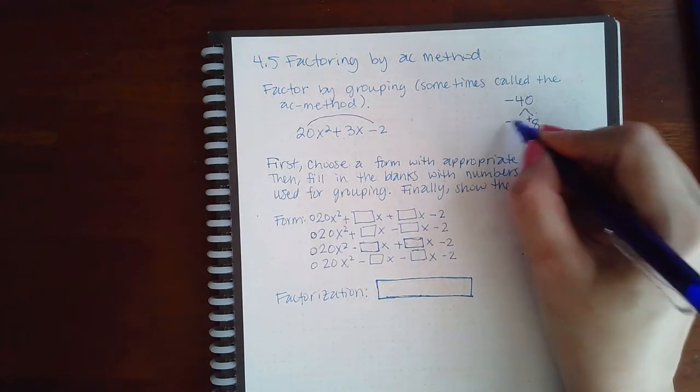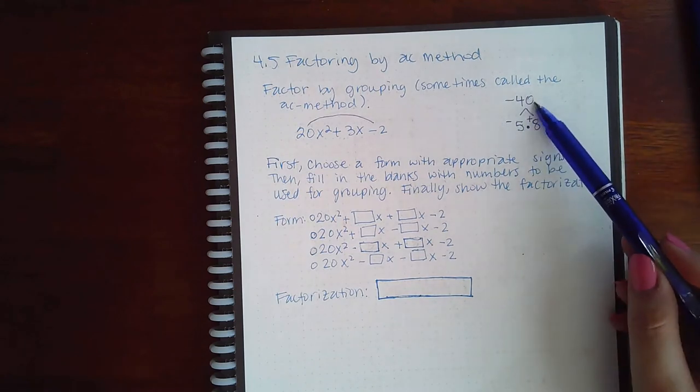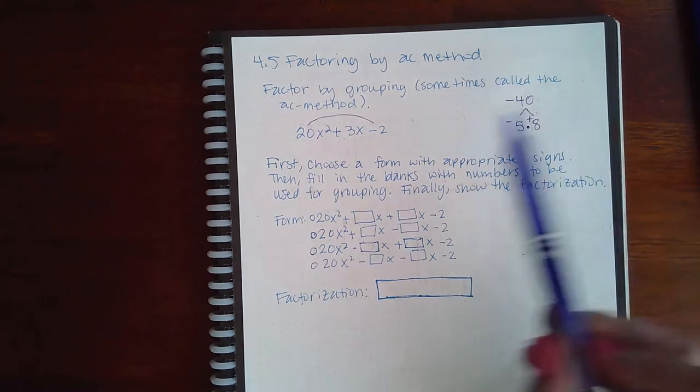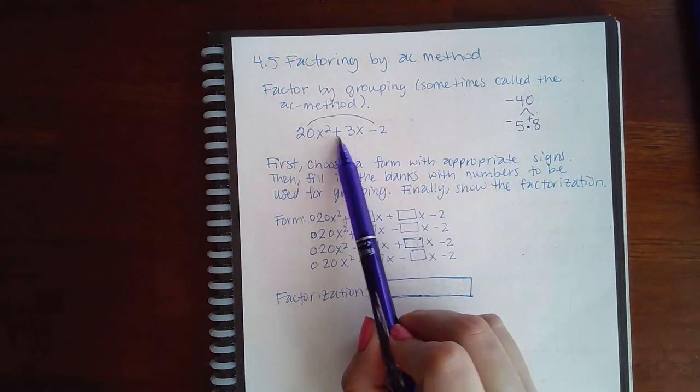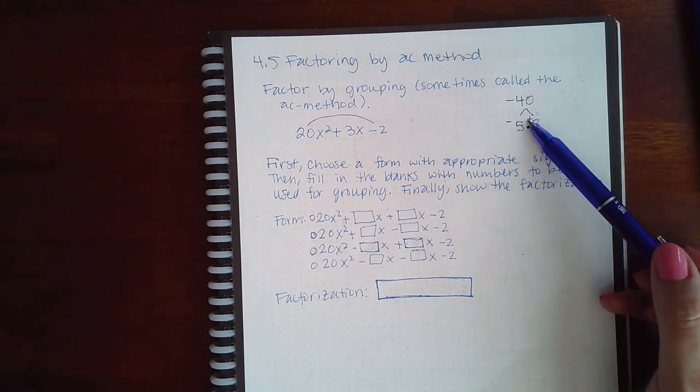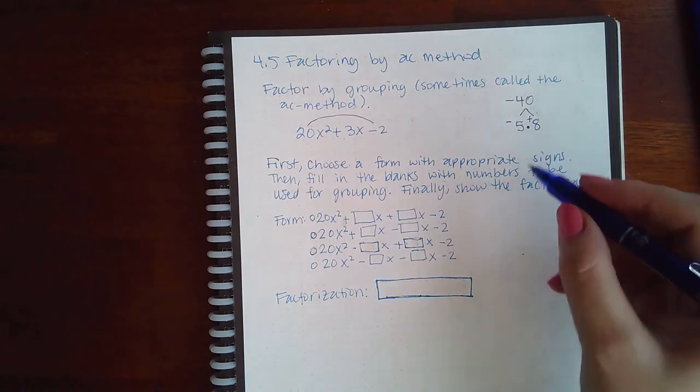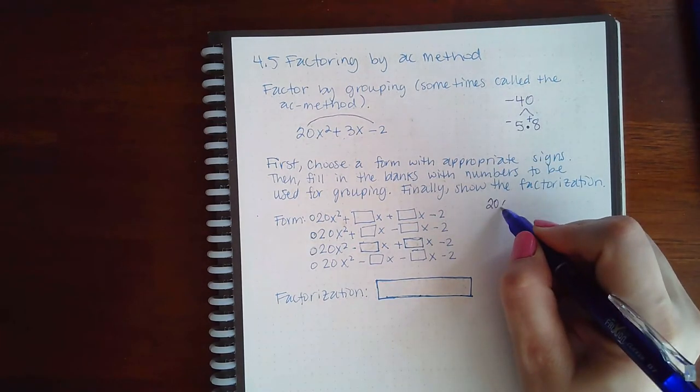Just verify again to be sure. Do these multiply to give me negative 40? Yes. Do they combine to give me positive 3? Yes. Think of it as negative 5 plus 8 that gives me positive 3. So then what do I do with those? I rewrite 20x squared.